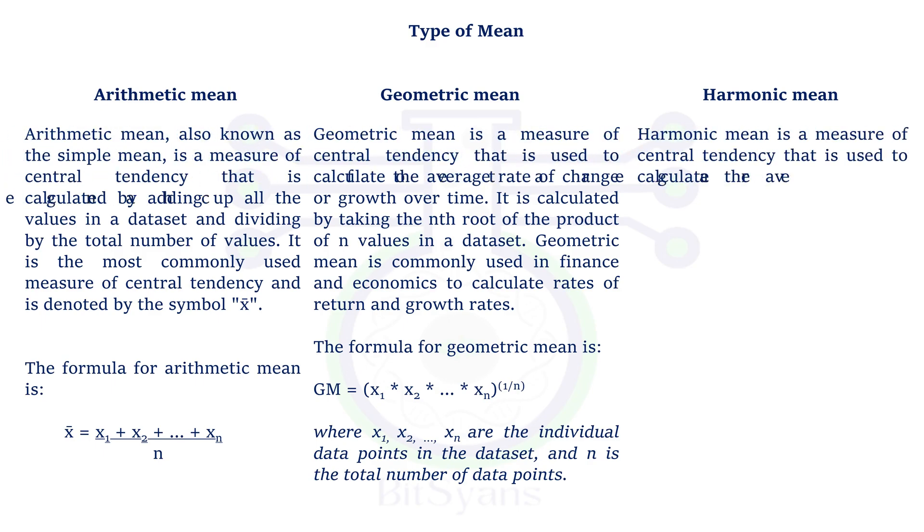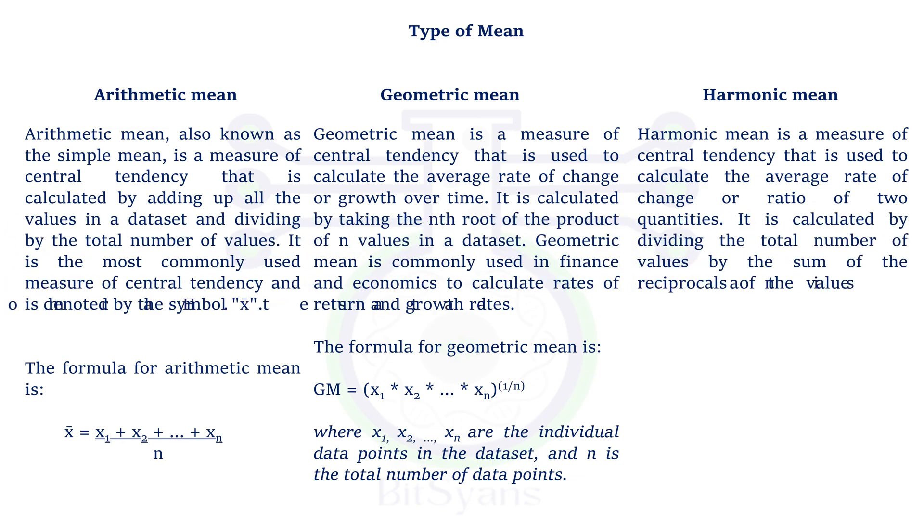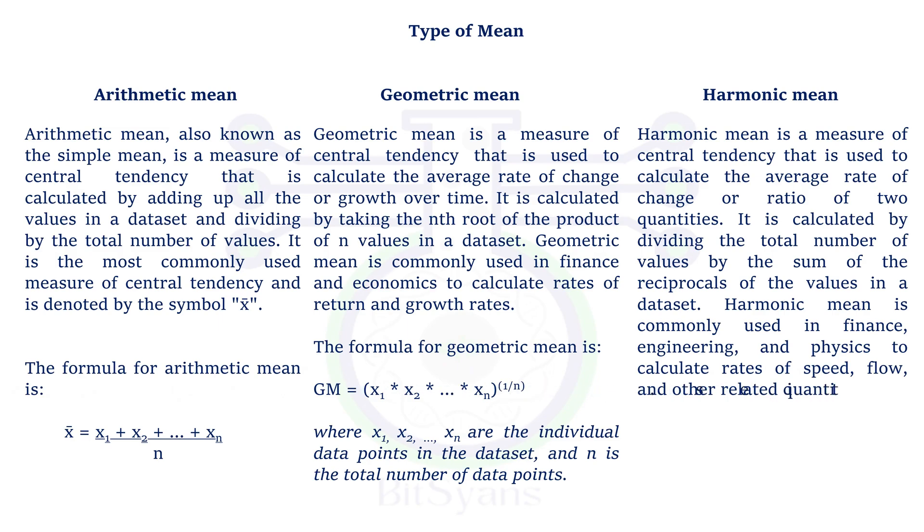Now, coming to the harmonic mean, harmonic mean is the reciprocal of the arithmetic mean of a given observation. And this is the formula for harmonic mean. When we talk about harmonic mean, it is commonly used in finance, engineering, and physics to calculate the rate of speed, flow, or other related quantity. However, if we compare, geometric mean is commonly used in finance and economics to calculate the rates of return and growth rates.